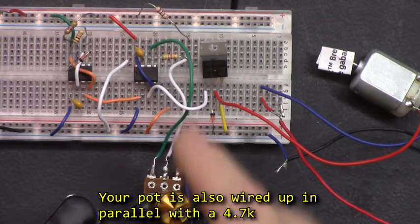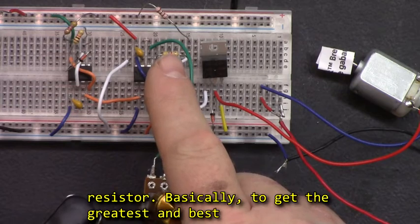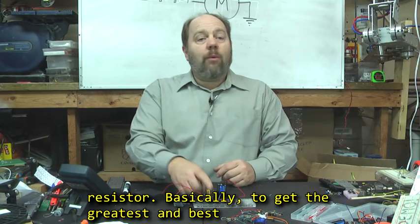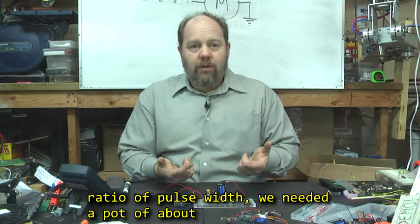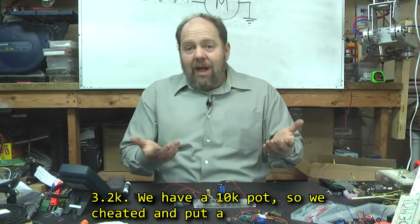Your pot is also wired up in parallel with a 4.7K resistor. So basically to get the greatest and best ratio of pulse width, we needed a pot of about 3.2K. We only have a 10K pot, so we cheated and put a 4.7K in parallel with the pot.